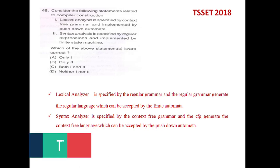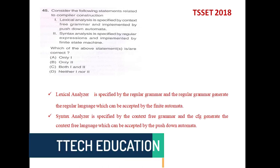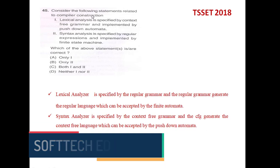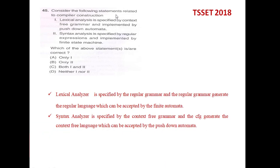Welcome to Software Education. Today we will see some of the solutions of the GATE 2018 Computer Science question paper. Question number 45 is about: consider the following statements related to the compiler construction.